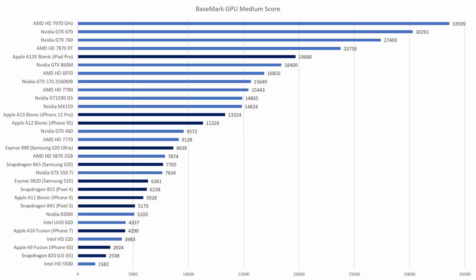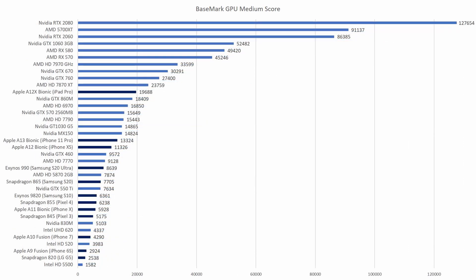Moving up in the chart we find the Tahiti HD 7870 XT, and then the Kepler GTX 760 and 670, followed by the all-AMD flagship the HD 7970 GHz Edition. Now expanding the chart we can see the top-scoring GPUs in this test: firstly the Polaris RX 570 and RX 580, followed by the Pascal GTX 1060, and then way off in the distance the Turing RTX 2060 and RDNA RX 5700 XT. Leading the chart at nearly 130,000 points, the RTX 2080.